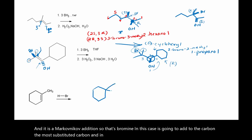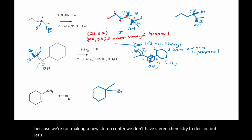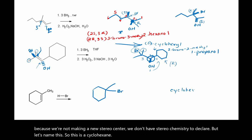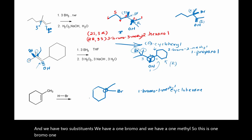In this case that's going to be this one right here. Because we are not making a new stereocenter, we don't have stereochemistry to declare. This is a cyclohexane and we have two substituents: a 1-bromo and a 1-methyl. So this is 1-bromo-1-methylcyclohexane. This is not a stereocenter because these two groups are identical.